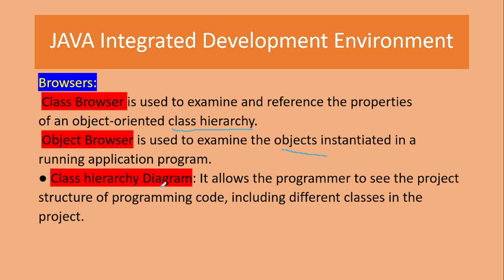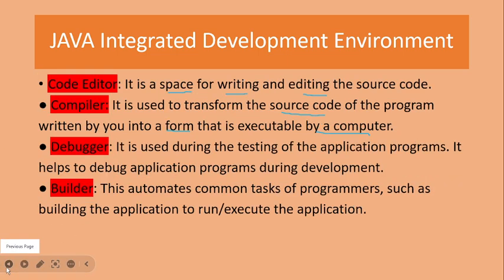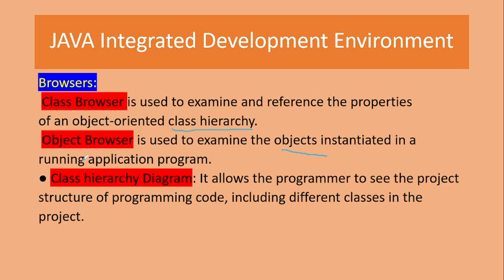Next is the class hierarchy diagram. It allows a programmer to see the project structure, including the different classes in the project. So these are some features of Java IDE: the code editor, the compiler, the debugger, the builder, the browser, and the class hierarchy.